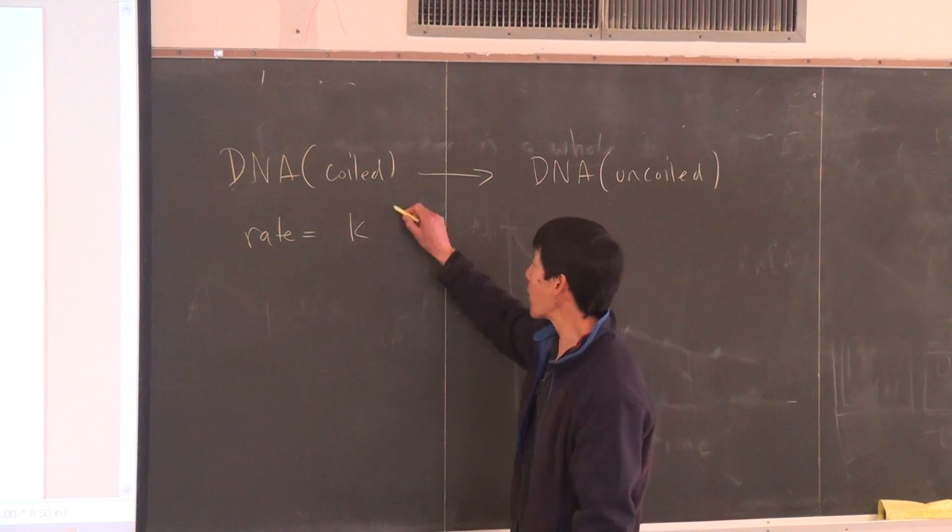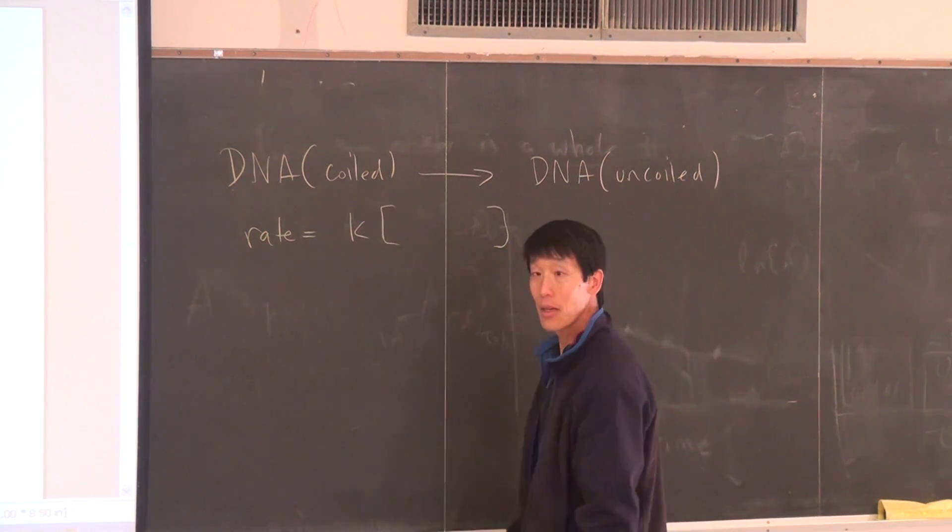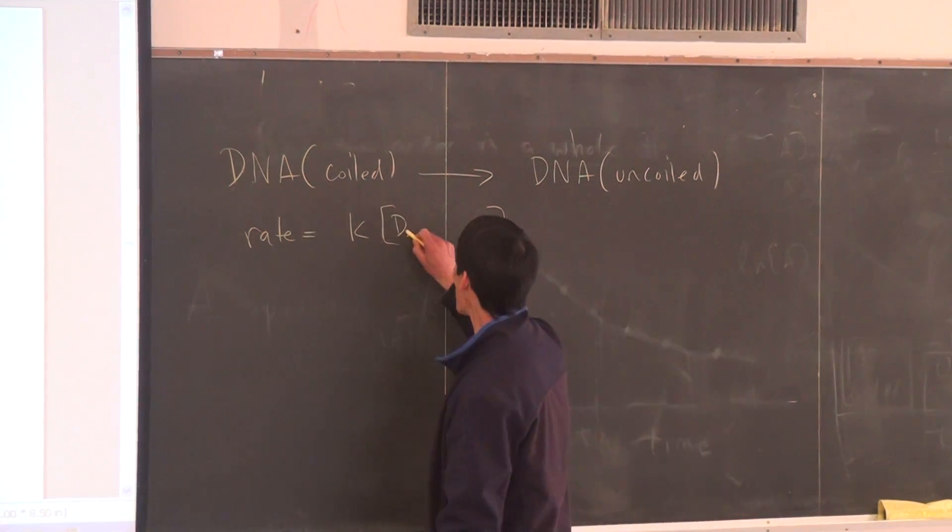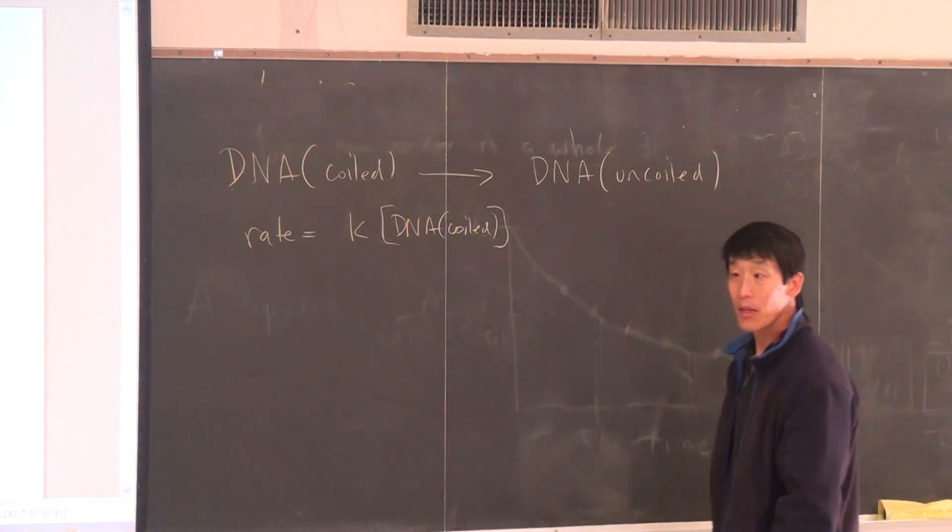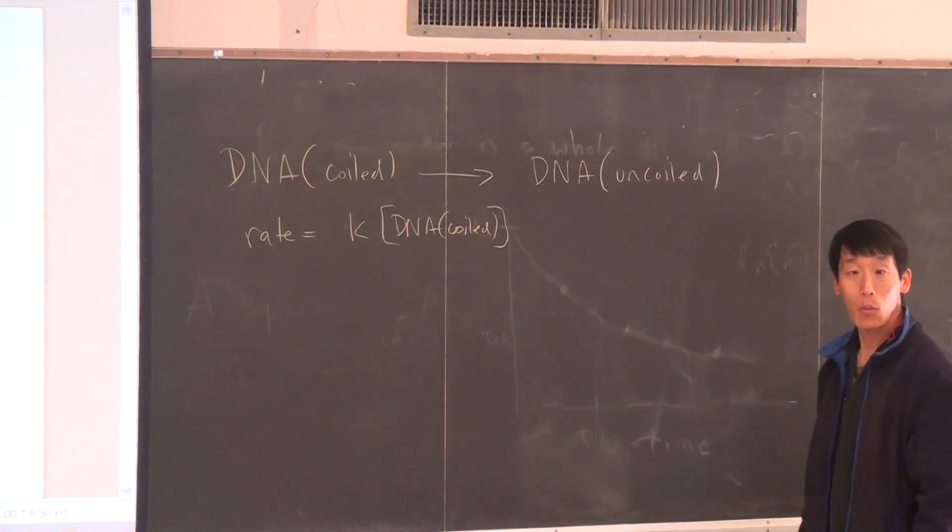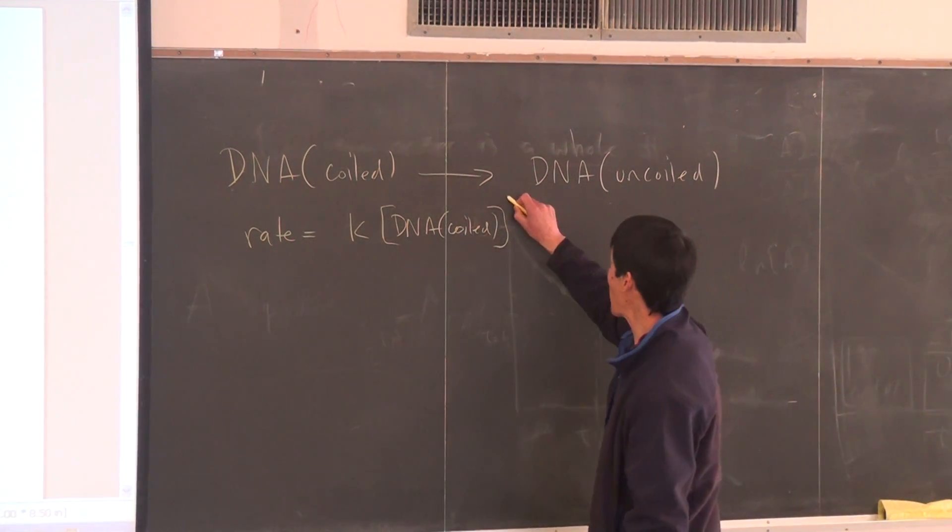Concentration. Yeah, the concentration of coiled DNA. And what's going to be the exponent? One. So this represents the rate law for this reaction.